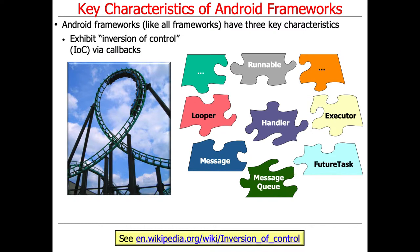The first thing that a framework has — and you may have picked this up from that sequence diagram I showed you before, where the control goes back and forth — is that frameworks exhibit what's called inversion of control, or IOC, by using callbacks to hook methods, as we'll see.